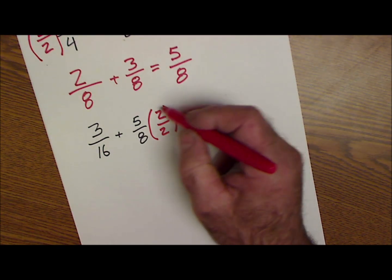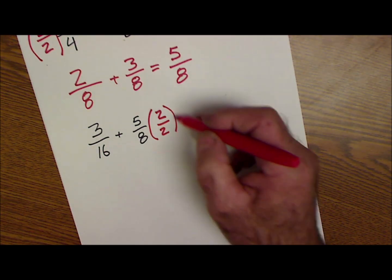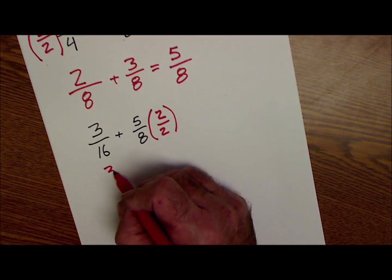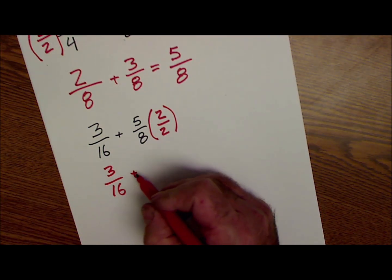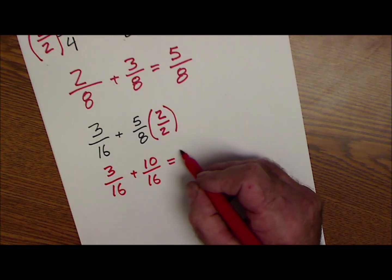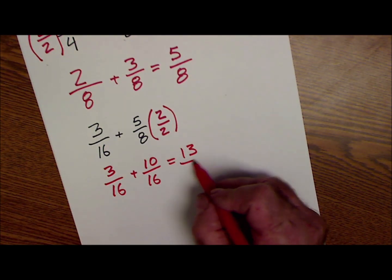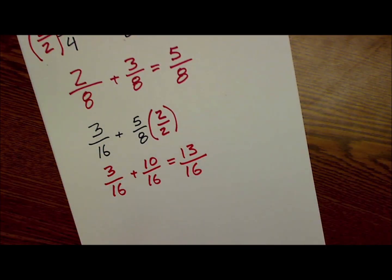And then two over two, this thing is equal to one, so when I multiply it by that, it doesn't change the value. So that gives me three-sixteenths plus ten-sixteenths. Add across the top to get 13. Bottom number is 16, and that's your answer right there.